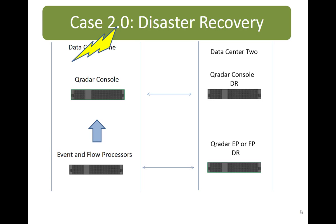Even in a case like Hurricane Katrina, where the primary data center is just gone and you might be three months getting back up and running, the DR site will continue to run indefinitely from data center two until you can get data center one back up and running. So it is less complete, but more robust than the HA scenario.